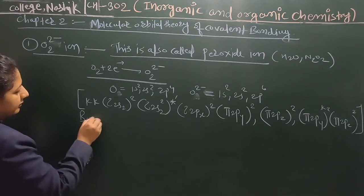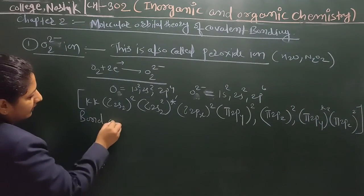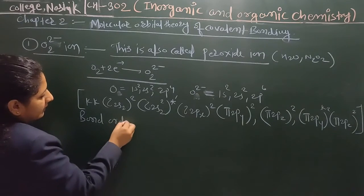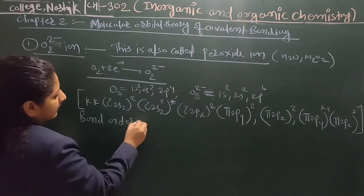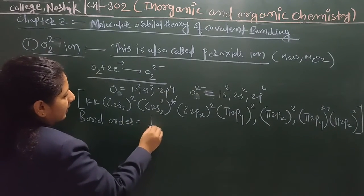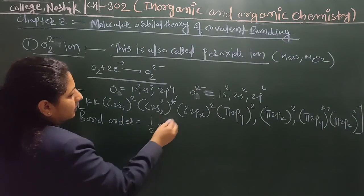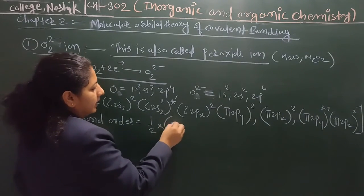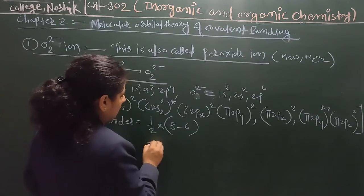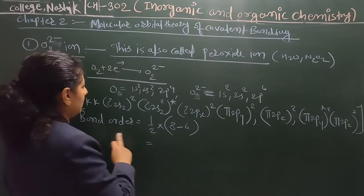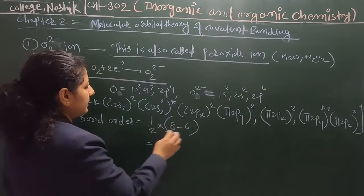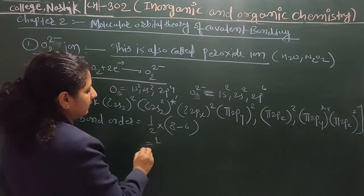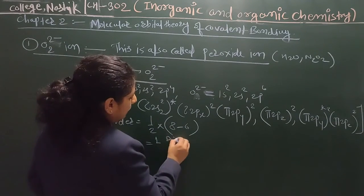The bond order for O2 2-minus is half into 6, giving a bond order of 1.